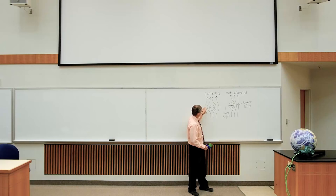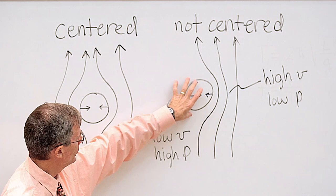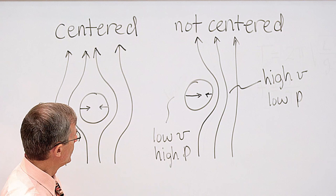So let's say it moves to the left, and this shows the uncentered situation, with the ball to the left and the stream of air going past it on the right.